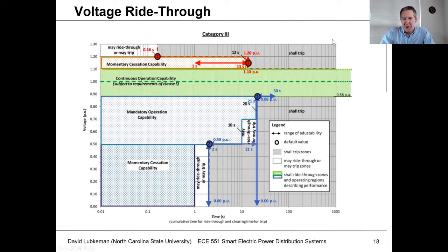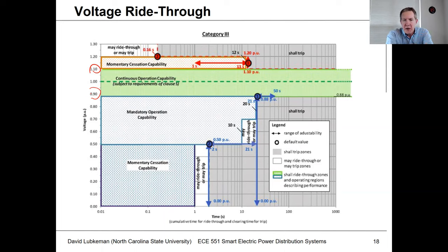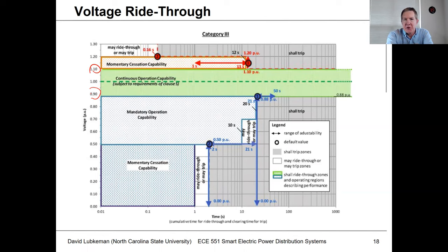Let me try to break this down a little bit. If we have a grid disturbance, we don't want the DER necessarily to trip offline, because if it's a large percentage of our total generation, we can't afford that. There's what's called a voltage ride-through requirement where inverters need to operate a certain way during either an outage or a voltage sag. So basically, what you see in green between 1.1 and 0.9 per unit is the normal operating range. Between 0.9 and 1.1, any inverter interface is supposed to stay connected.